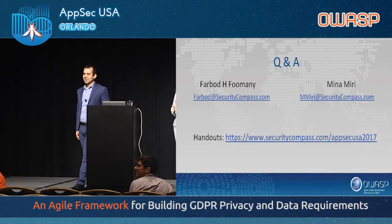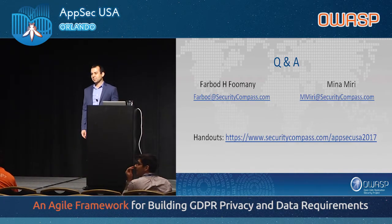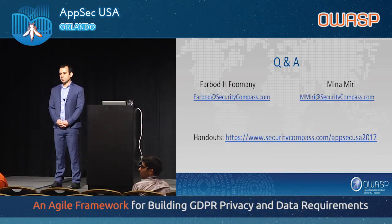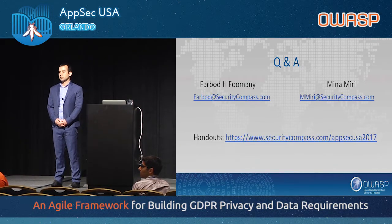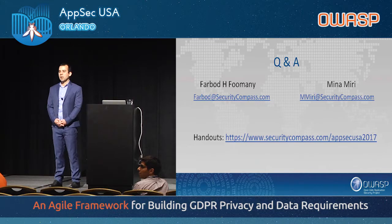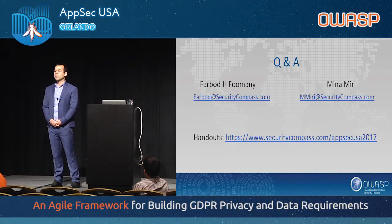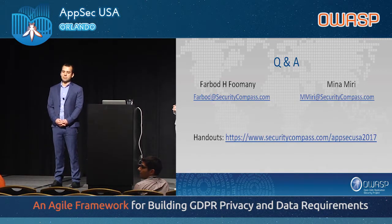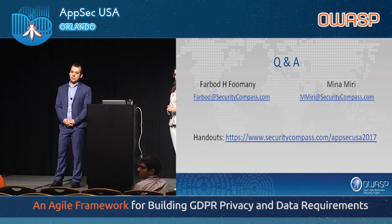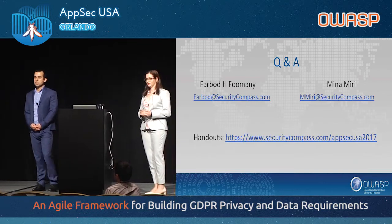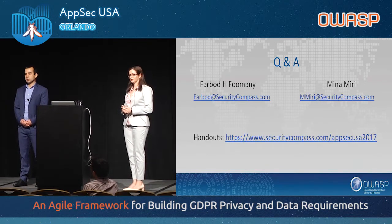A question from the audience: earlier in the presentation you mentioned a study predicting 75,000 data protection officers worldwide, including 9,000 in the United States — can you talk about that study and whether they realistically expect 9,000 American companies to hire a DPO? The article is available on the IAPP — the International Association of Privacy Professionals — website, and it explains the basis for that calculation. You can email me and I can send you the slide with the link.